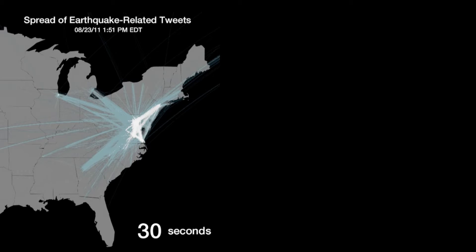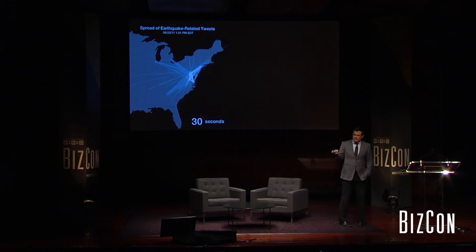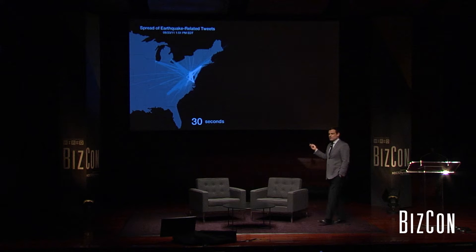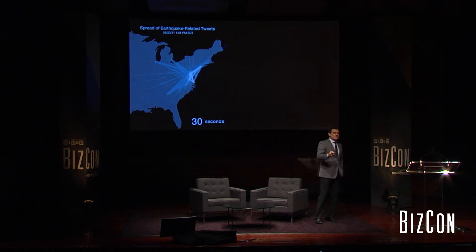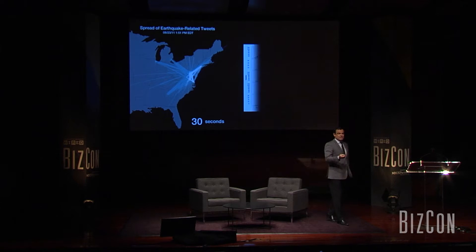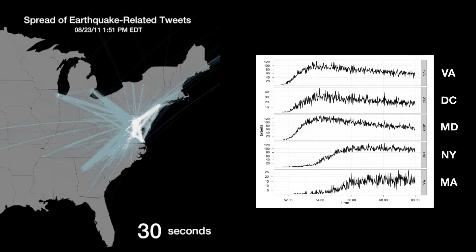We had just moved into the Twitter New York office when this happened. There were only four or five of us at the time. And someone down the row of desks said, there's an earthquake in D.C. We thought that must be a prank of some sort. And then moments after that, we felt the building shake. So this meant that the tweets were traveling faster than the actual tremors, than the shockwave.